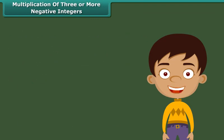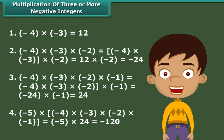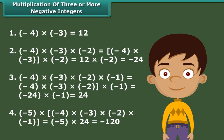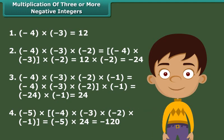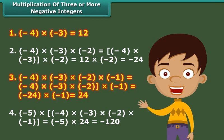We can see that in the first and third examples, the number of negative integers that are multiplied are even — two and four respectively — and the products obtained are positive integers.